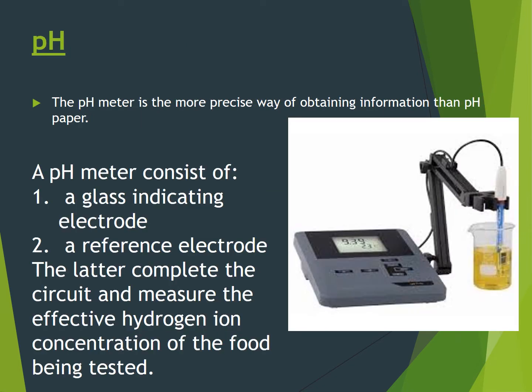The pH meter is a more precise way of obtaining information than pH paper. Because it is digital, it gives more authentic results than a pH paper. It is made up of a glass indicating electrode, a reference electrode, and together they complete the circuit and measure the effective hydrogen ion concentration of the food that is being tested.